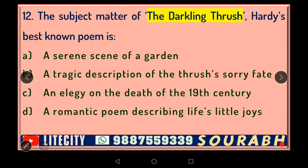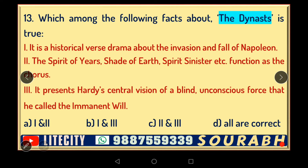Our next question: what is the subject matter of 'The Darkling Thrush,' considered to be Hardy's best-known poem? Is it A) a serene scene of a garden, B) a tragic description of the thrush's fate, C) an elegy on the death of the 19th century, or D) a romantic poem describing life's little joys? Unlike Shelley's 'Skylark' or Keats's 'Nightingale,' Hardy doesn't give the bird anthropomorphic qualities; rather, he presents an elegy on the death of the 19th century as it comes to an end.